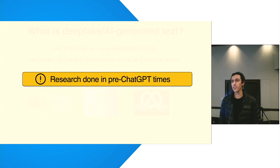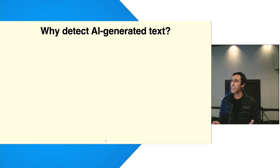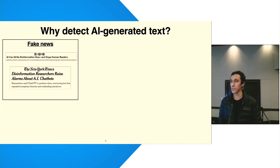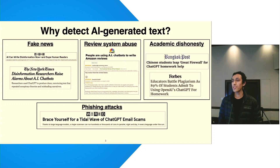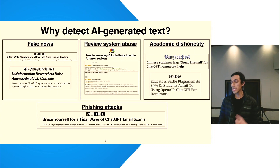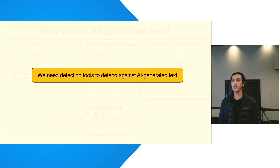I should mention that we did this research in pre-ChatGPT times, and the models and datasets we evaluated represented the state-of-the-art in AI text back then. So why is detecting AI-generated text really even important? Language models are able to produce convincing text on a number of topics, and that means they can be misused in a number of ways. For example, bad actors can use them to generate misinformation and fake news, compromise the integrity of online review systems, launch phishing attacks, whereas students can use them to finish homework assignments. The point is that our inability to distinguish between human and AI-written text can have serious consequences, and that makes it imperative that we have detection tools to defend against AI-generated text.